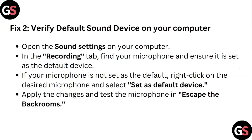Step 2: Verify the default sound device on your computer. Open the sound settings on your computer. In the recording tab, find your microphone and ensure it is set as the default device. If your microphone is not set as the default, right-click on the desired microphone and select 'Set as Default Device'. Apply the changes and test the microphone.